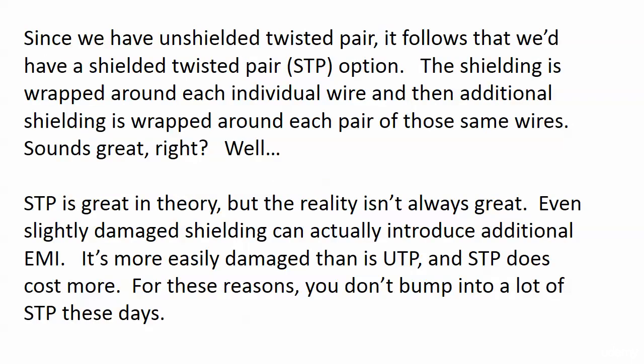Now that we've answered the twisted pair question, the second question is: if it's unshielded twisted pair, why don't we have a shield? And does that mean there's a shielded twisted pair option? There is. The shielding in STP is extensive — it's wrapped around each individual wire first, then additional shielding is wrapped around each pair of those same wires.